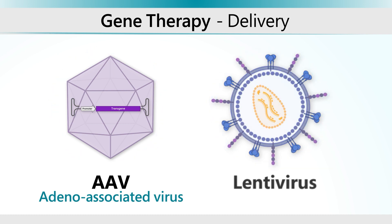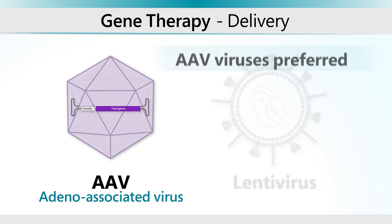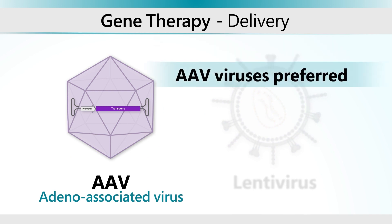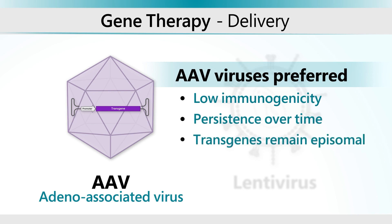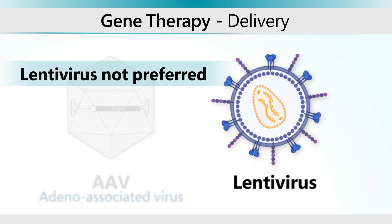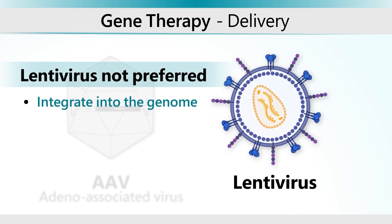In comparison to lentiviruses, AAV viruses are preferred because of their low immunogenicity, ability to persist for a long period of time, and the fact that transgenes remain primarily episomal in nature. In contrast, lentiviruses integrate into the genome, occasionally causing errors in other genes.